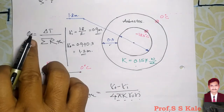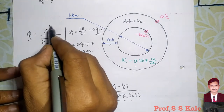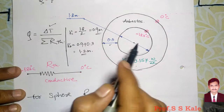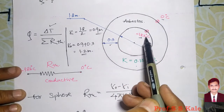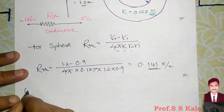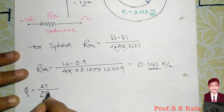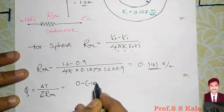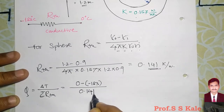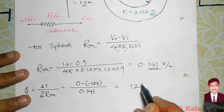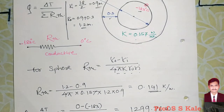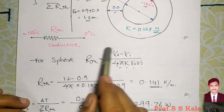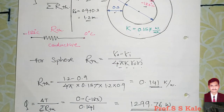Now Q = ΔT / Rth. The higher temperature is 0°C and the lower is minus 183°C, so ΔT = 0 − (−183) = 183°C. Therefore Q = 183 / 0.141 = 1299.76 watt. That is the final answer. The only difference for sphere problems is this resistance formula — if you know it, there is no difference between a sphere and cylinder problem.